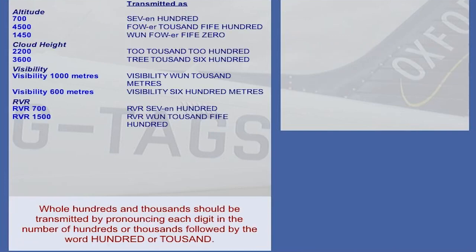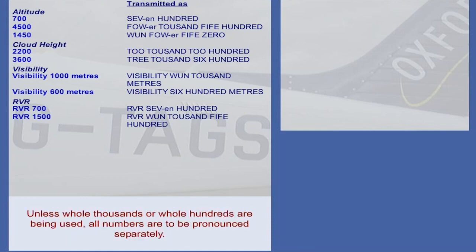The exceptions to the rules given in the previous section are numbers used in the transmission of altitude, cloud height, visibility, and runway visual range information which contain whole hundreds and whole thousands. These numbers should be transmitted by pronouncing each digit in the number of hundreds or thousands, followed by the word 'hundred' or 'thousand' as appropriate. Unless whole thousands or whole hundreds are being used, all numbers are to be pronounced separately. Click on a number in the list to hear how it's pronounced. You may use the record playback facility if you wish.